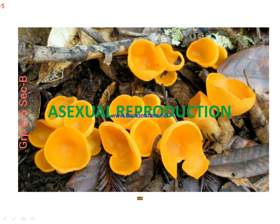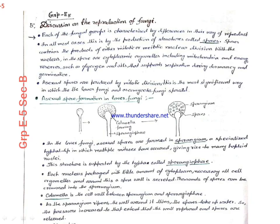First we discuss about the asexual reproduction in fungi. In asexual reproduction of fungi, each of the fungal groups is characterized by their differences in the way of reproduction. In most cases, this is the production of structures by spores. Spores contain the products of either mitotic or meiotic nuclear division. Within the nucleus, the spores are cytoplasmic organelles including mitochondria, energy reserves such as glycogen and oils that support respiration during dormancy and germination.